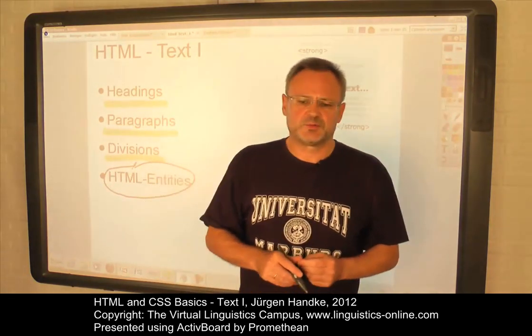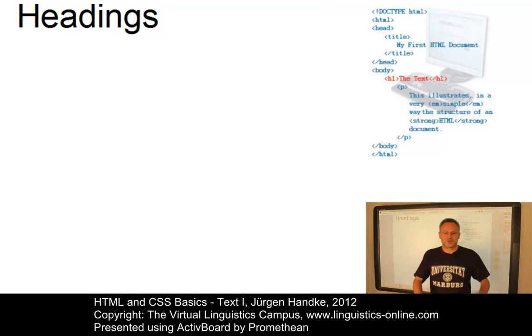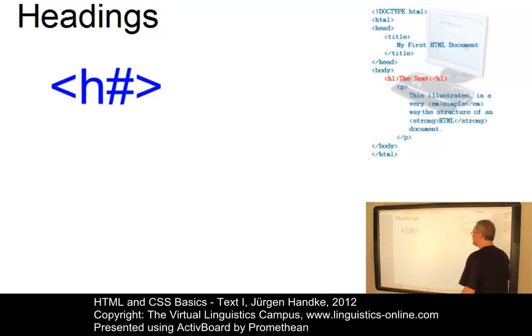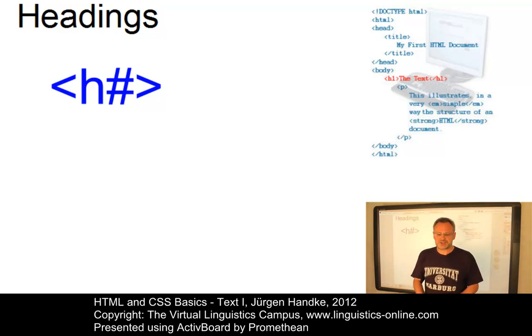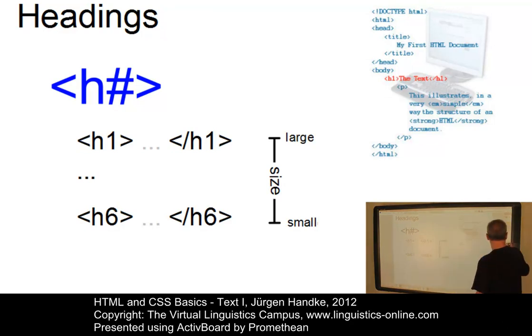But let us now start with the formatting of text and let's first look at headings. To define a heading in an HTML document, the content of the heading has to be inserted between the heading tag. The heading tag consists of the letter H for heading and a number ranging from 1 to 6. This number is the heading level and it defines the size with which a heading is displayed in the browser. The range is from 1 large to 6 small.